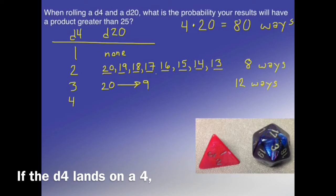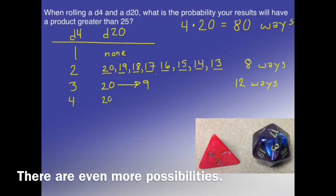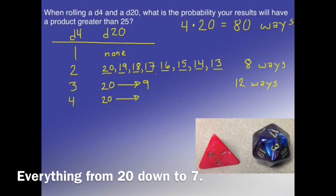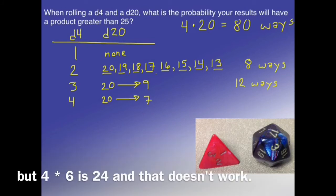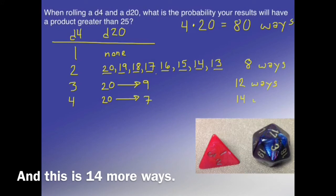If the d4 lands on a 4, there are even more possibilities. Everything from 20 down to 7. 4 times 7 is 28, so that works, but 4 times 6 is 24, and that doesn't work. And this is 14 more ways.